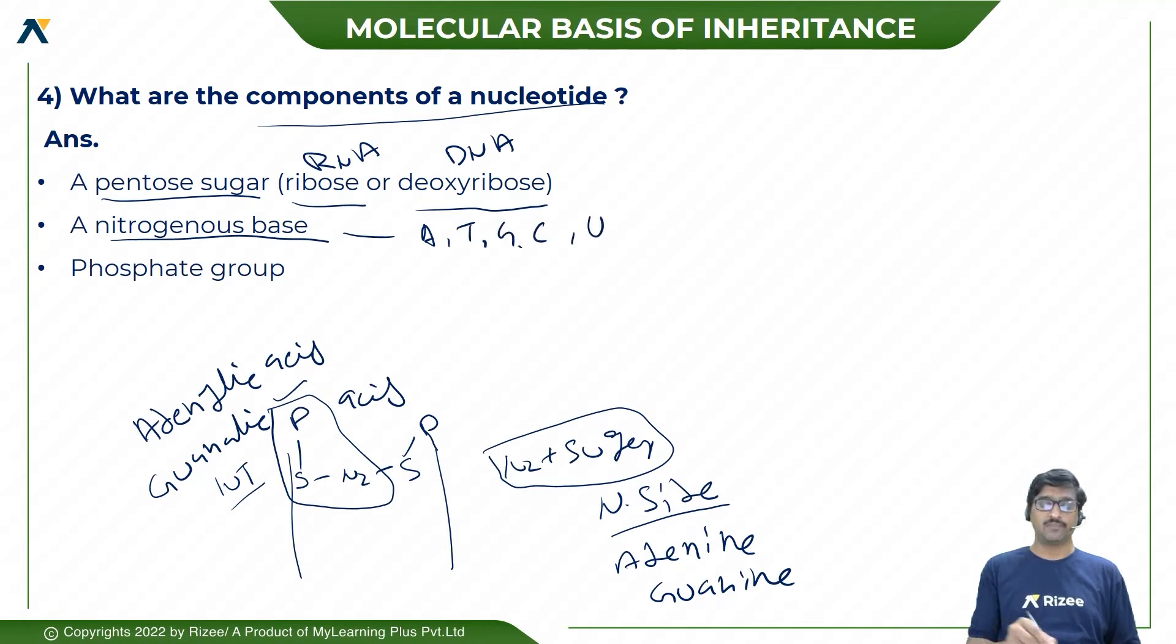So the components of a nucleotide are nitrogen base, phosphate group, and pentose sugar. This is a very important question for exams.